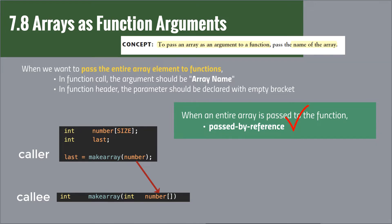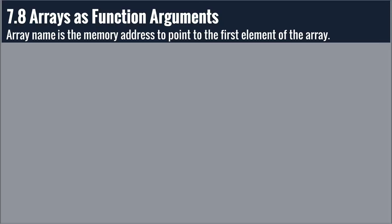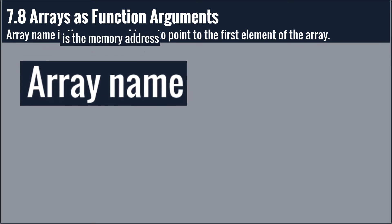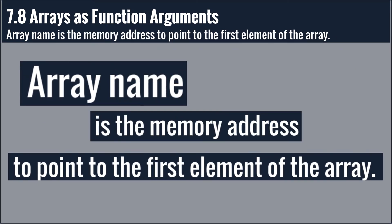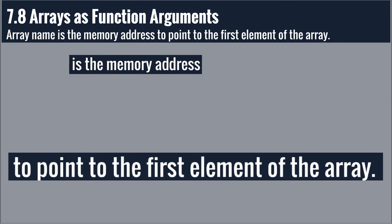It means that when we change or modify the contents of the array, we can see the change effects reflected after the called function. The array name is the memory address pointing to the first element of the array.